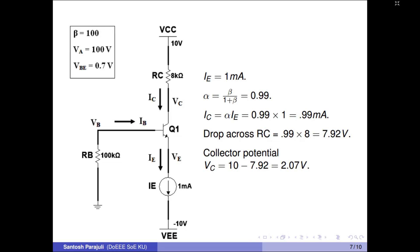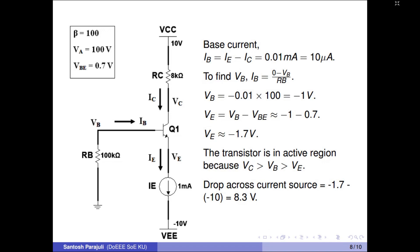The drop across collector resistor RC is 1 times 8, that is nearly 8 volts. The collector node potential is 10 volts minus 8 volts, which is 2 volts. After finding the collector potential, let's find the base current. In the active region, base current is collector current over beta, which is nearly 10 microamperes. The base current can also be found by taking the difference of emitter current and collector current. To find the base node potential, base current is expressed as 0 minus Vb over Rb. This yields minus 1 volt base potential.